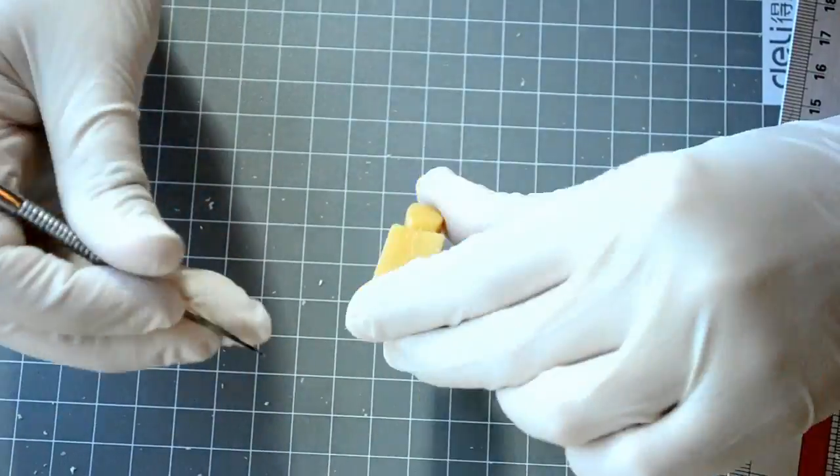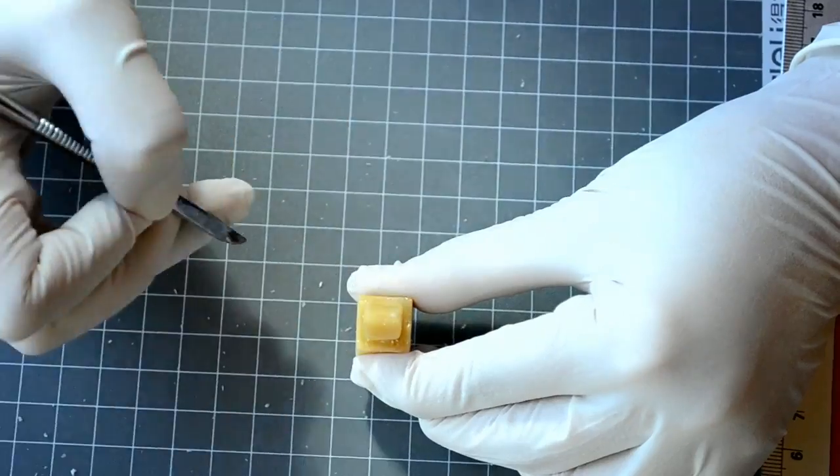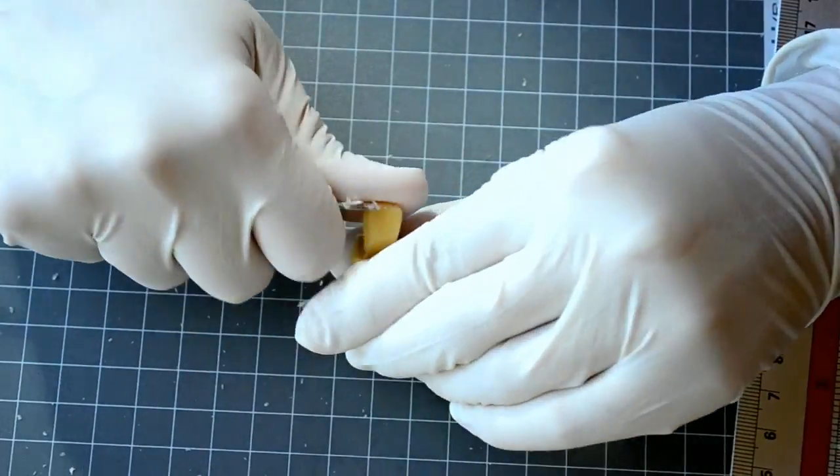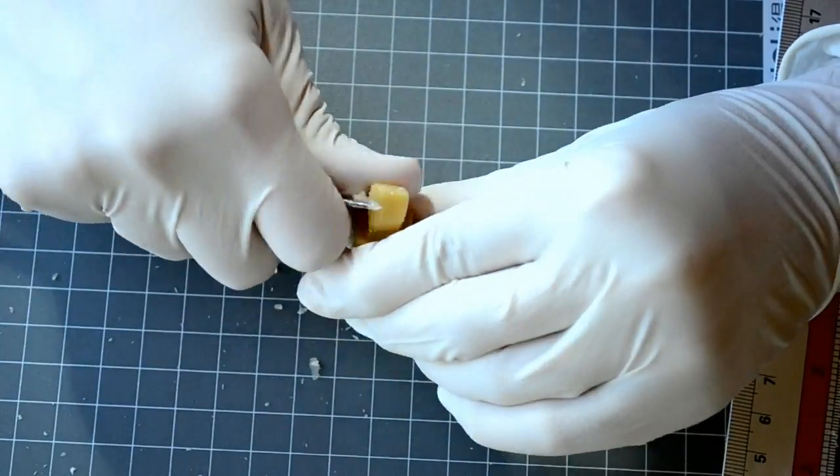To carve the labial ridge, draw a line at the center of the labial surface, then carve from the mesial and distal sides until you have a prominent labial ridge.